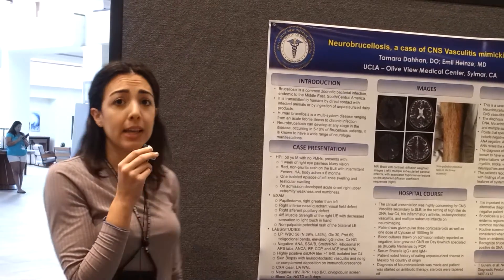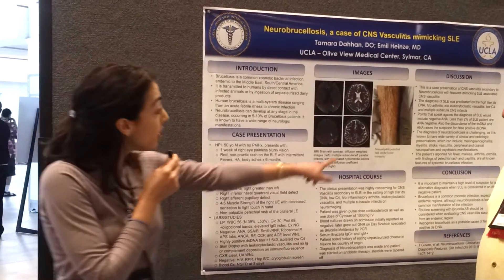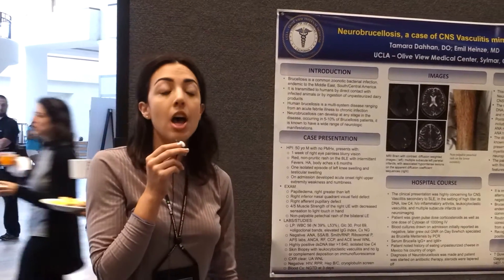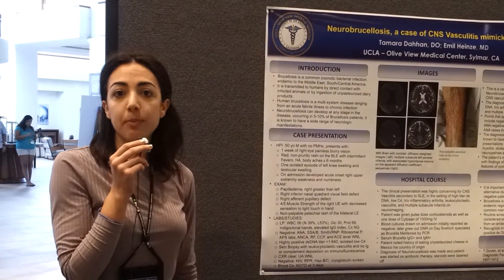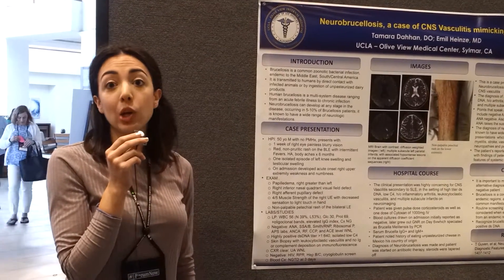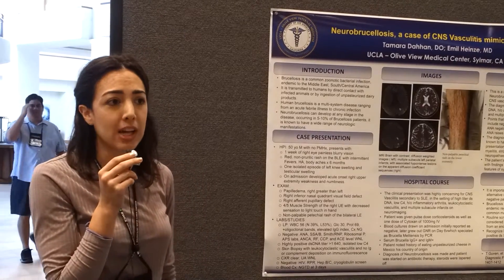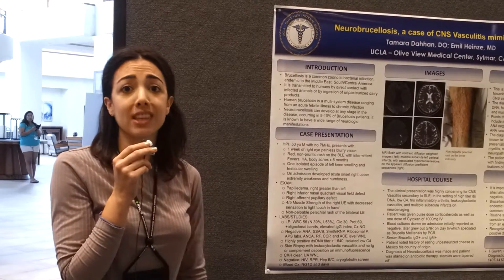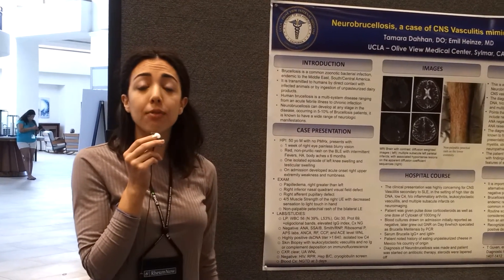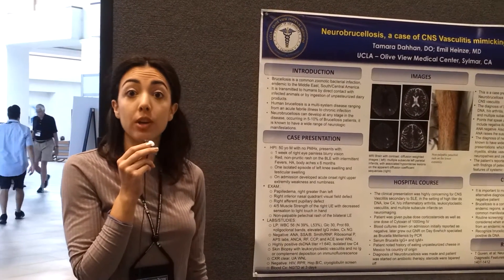He also presented with a rash. We biopsied the lower extremity rash that appeared petechial in nature — you can see a picture of it right here — and that confirmed leukocytoclastic vasculitis, but no immunoglobulin deposition on immunofluorescence. He additionally had an isolated low C4. So we started to become very concerned for the possibility of lupus-associated CNS vasculitis, based off of the high dsDNA titer, a history of left knee swelling, an isolated low C4, and multiple subacute infarcts.